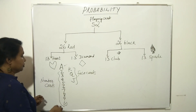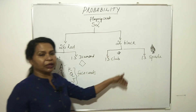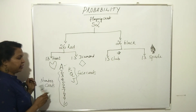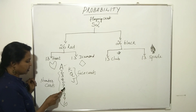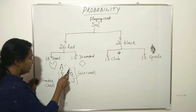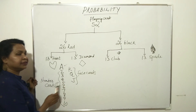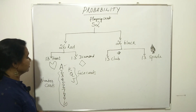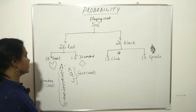Each card set has one suit — heart, diamond, club, or spade. The first card is Ace. Then number cards: 2, 3, 4, 5, 6, 7, 8, 9, 10. Then face cards: King, Queen, Jack. There are three face cards per set, and with 4 sets they total 12 face cards.